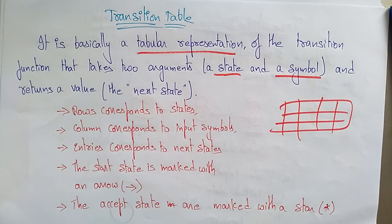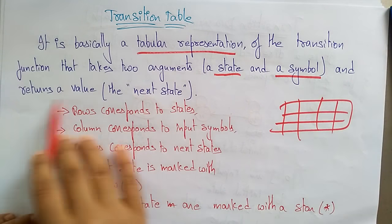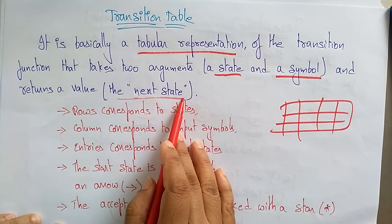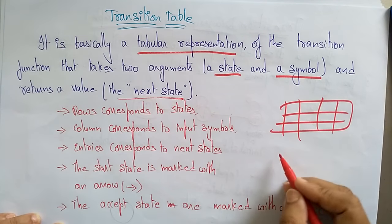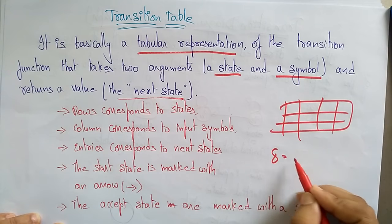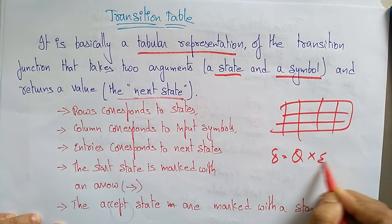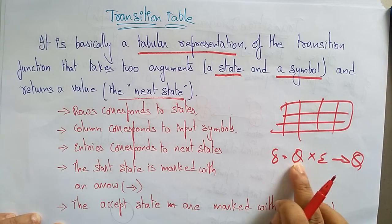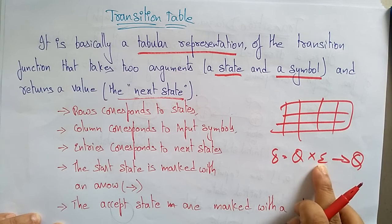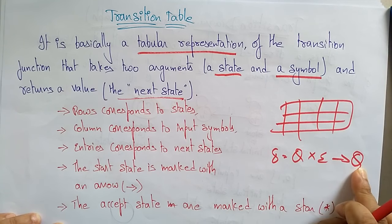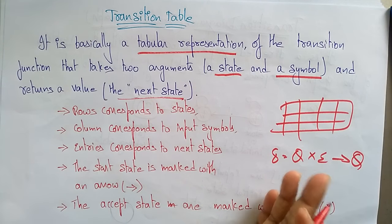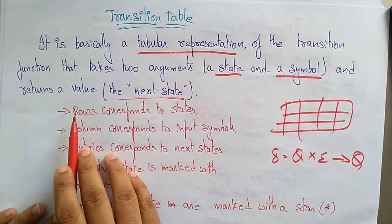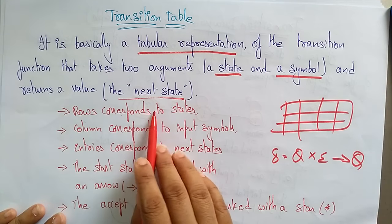In the previous example, 0 and 1 are the input symbols. The return value is the next state — that is the transition function. Delta maps from a state Q cross sigma (the input symbol) to return the next state Q.